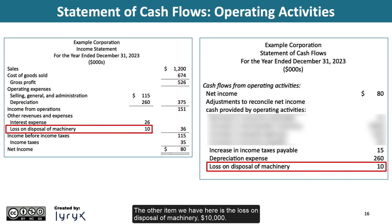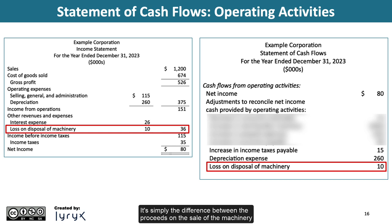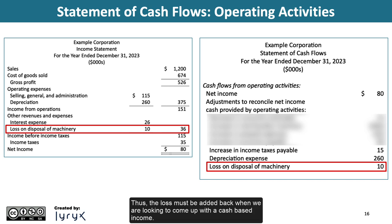The other item we have here is the loss on disposal of machinery of $10,000. Again, a loss is not a transaction that can be settled in cash — it's simply the difference between the proceeds on the sale of the machinery and the carrying value on the balance sheet. Thus, the loss must be added back when coming up with a cash-based income.